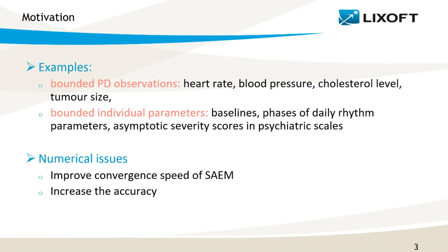The first reason is that models with bounds on observations or parameters are very common. For example, PD measurements of heart rate, blood pressure, or cholesterol level have typical known limits. Also, tumor size measurements can often be limited by the size of the organ where it grows. Moreover, baseline parameters and PD observations are connected and so they have the same limits. Other typical examples of bounded parameters are phases in models of daily rhythms and reference scores such as in the Psychiatry case.